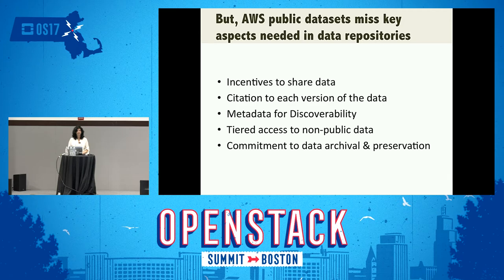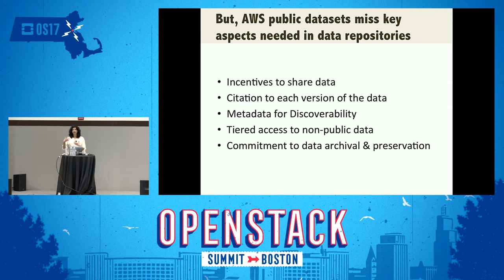However, AWS doesn't provide all the features you would need for a data repository in today's world. One key thing is having incentives for data sharing. If you are a data author who has collected, prepared, and cleaned a dataset, you've spent a lot of time on it. You might be okay making it available for others, but you want to get credit for that. With formal data citations — a reference to the dataset that gives attribution — that's one way of building an incentive for sharing your data.